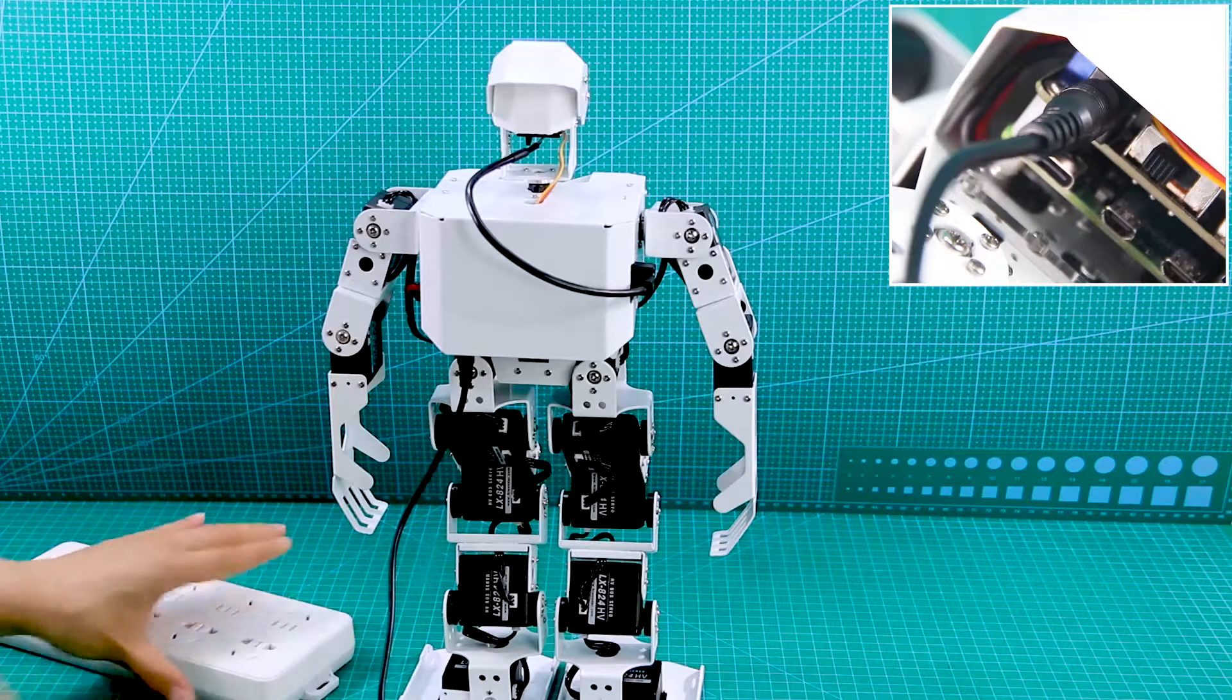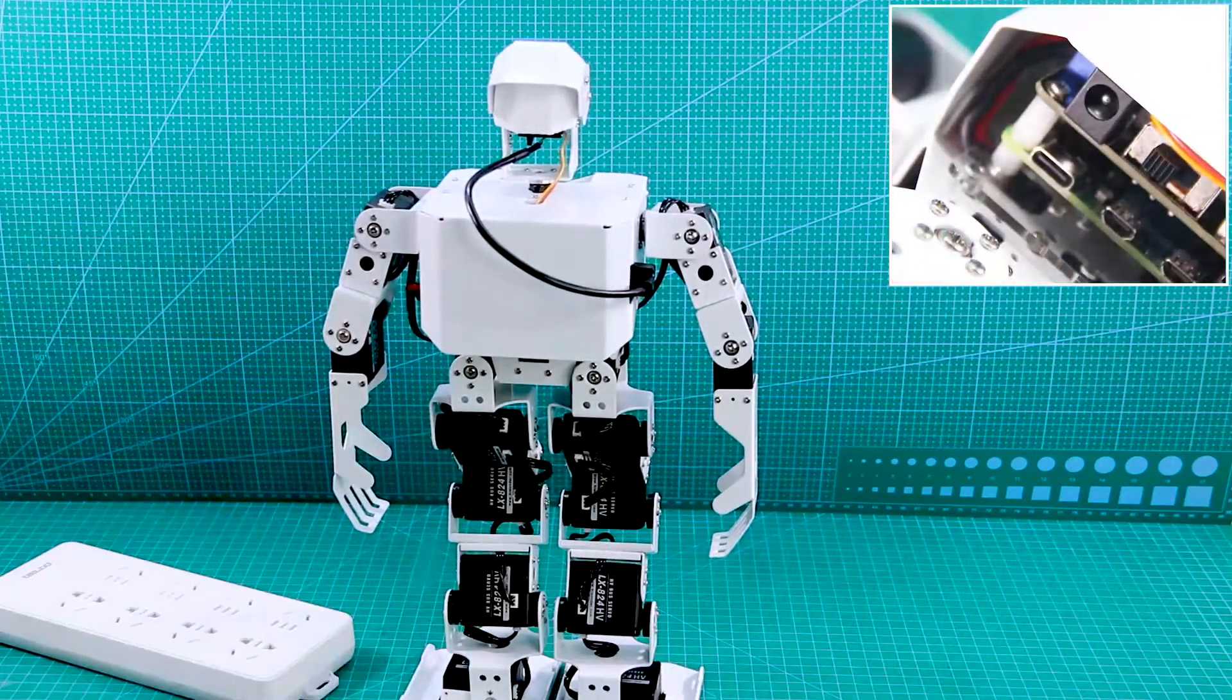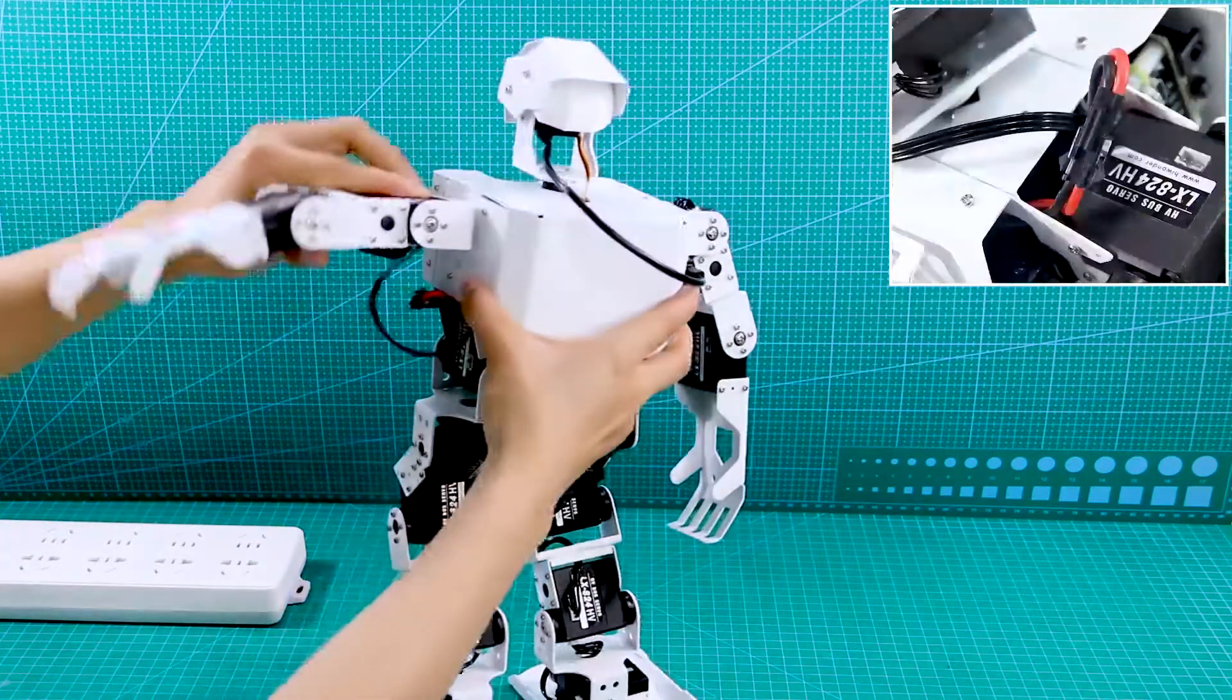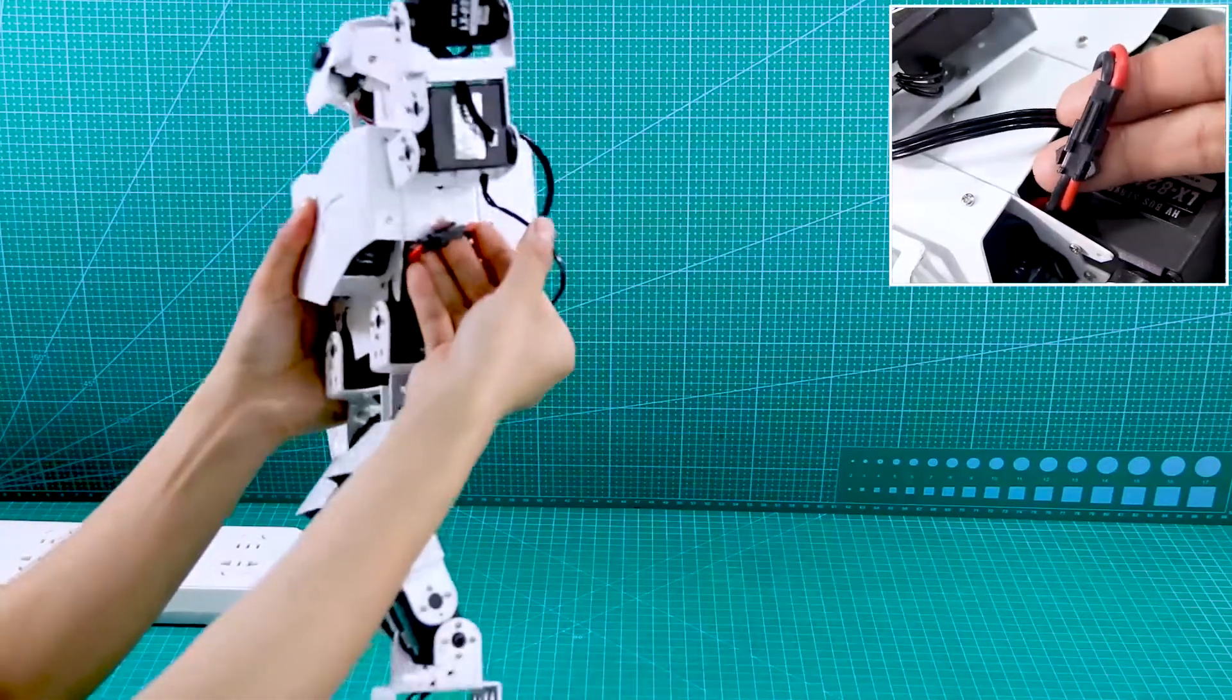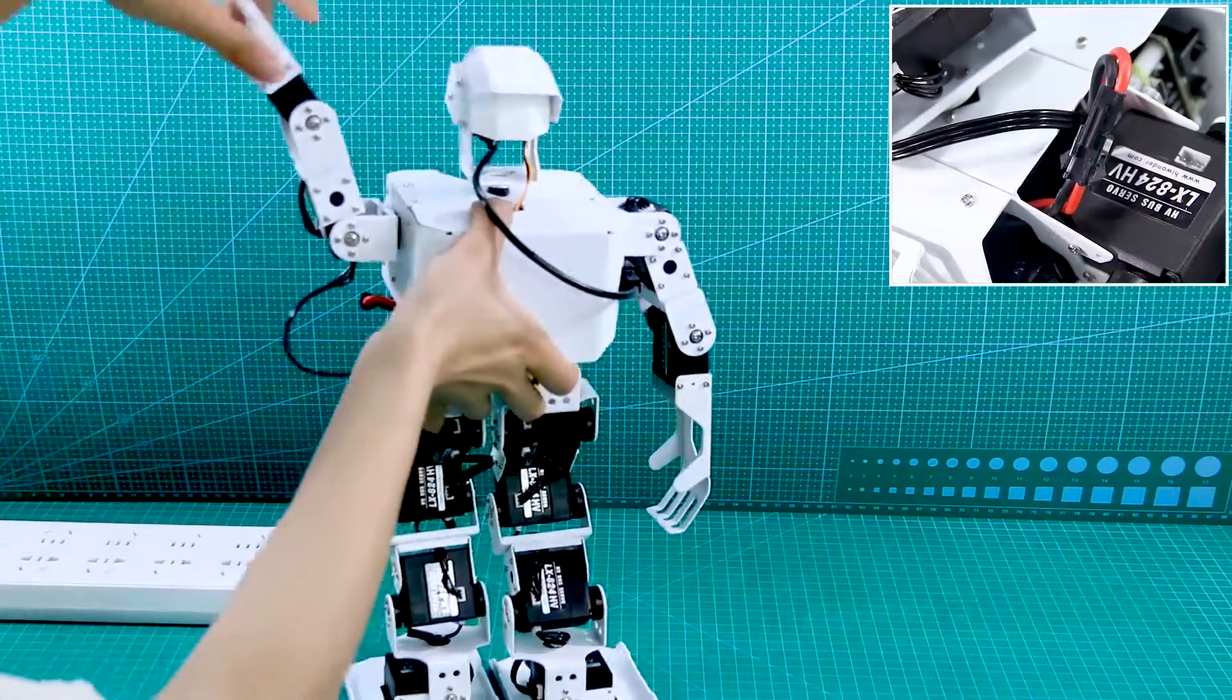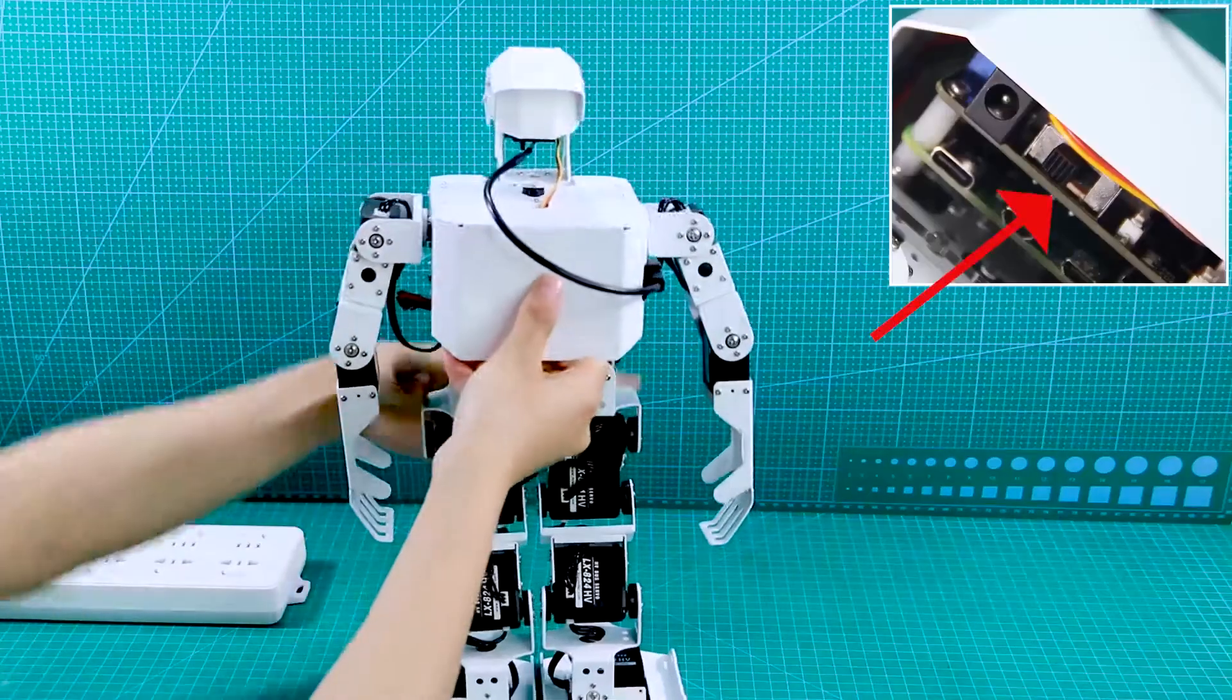We have explained how to charge TonyPi. Now we are going to teach you how to switch on TonyPi. Firstly, please check the battery wires - the red wire should be connected to the red port and black to black port. Then switch on the Raspberry Pi expansion board on the back, right here.